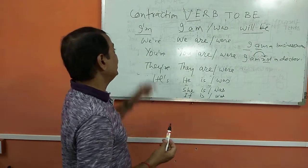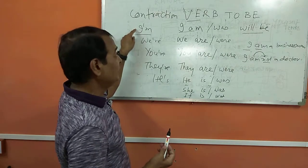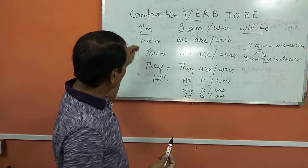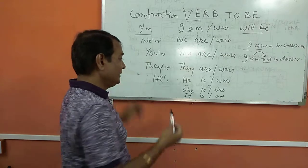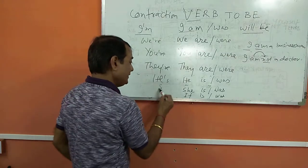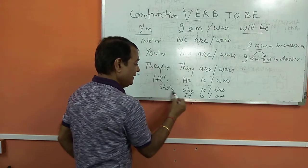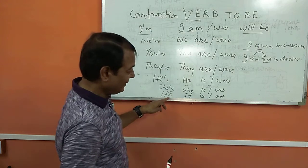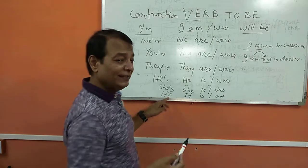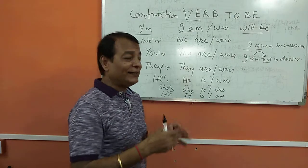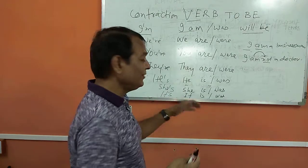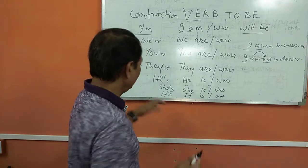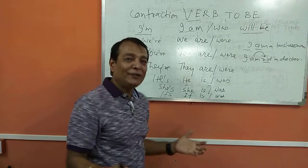If you want to be a fluent speaker you have to learn this rule: I'm, we're, you're, they're, he's, she's, it's. For example, 'It is Friday today' — you say 'It's Friday.' That's the contraction form.